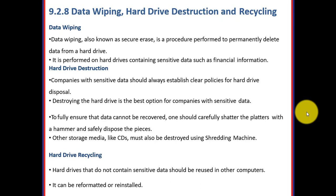Next we have Data Wiping, Hard Drive Destruction, and Recycling, which are methods of wiping or clearing data from unused hard drives. These are methods of disposing of hard drives that might contain sensitive information. Data wiping is the method of permanently deleting files. Simply clearing data might not be enough as it can be recovered easily, so hard drives are hammered and destroyed completely using shredding machines. Hard drives that do not contain sensitive data can be cleared, formatted, and reused in other computers.